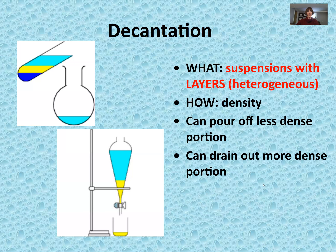The last technique is decantation. Decantation uses a heterogeneous mixture but instead of a solid and a liquid, you're working with two liquids of different densities. The less dense material sits on top and the more dense on the bottom, and decanting means pouring out those layers to separate them. An everyday application is skimming the fat layer off a rich soup — that fat is less dense and floats on top, so you skim or pour it off.